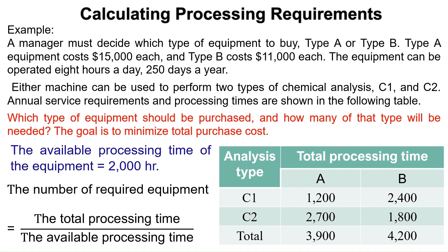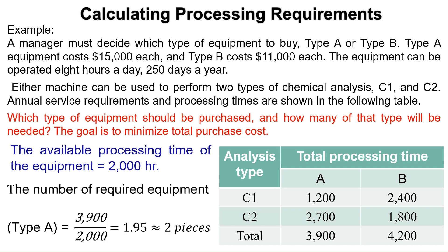After that, calculate the required equipment of each type by dividing the total processing time for each machine by the available processing time of the equipment. For Type A equipment, the required equipment equals 3,900 divided by 2,000 equals 1.95, approximately 2 pieces of equipment. For Type B equipment, the required equipment equals 4,200 divided by 2,000 equals 2.1, rounded up to 3 pieces of equipment.